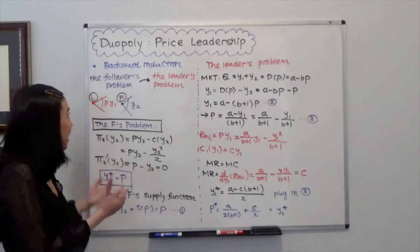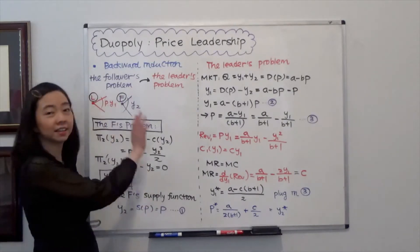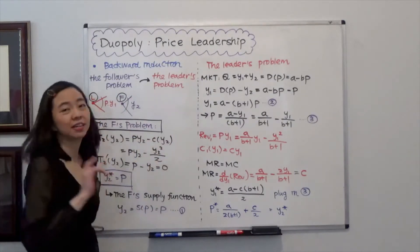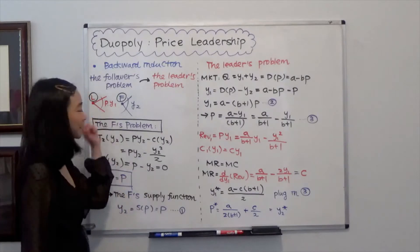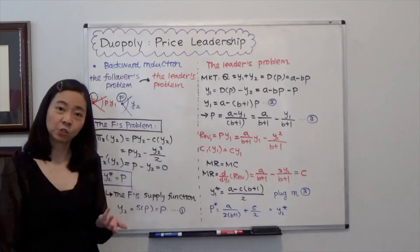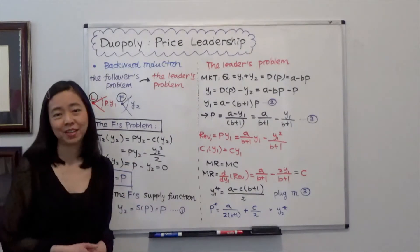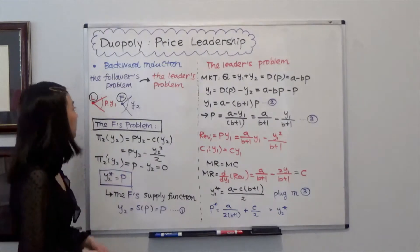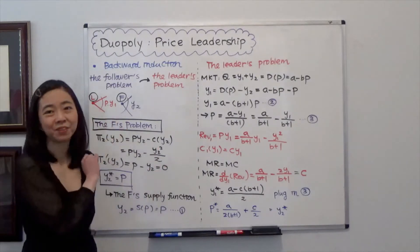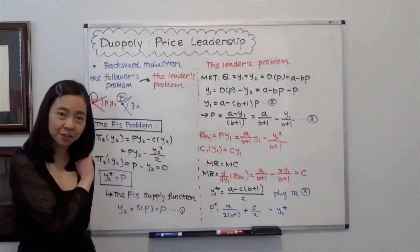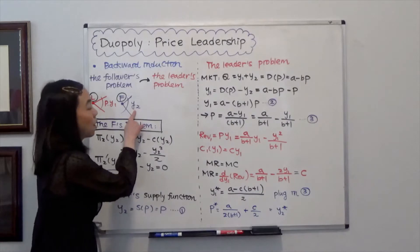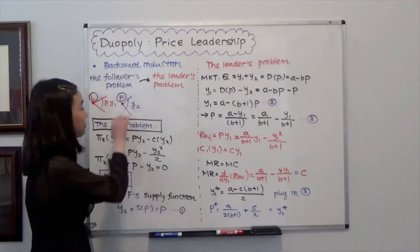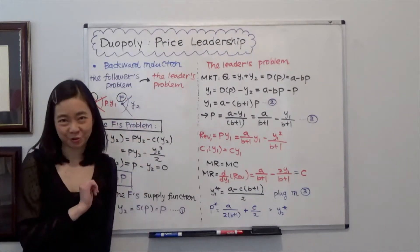In this game, we have a leader and a follower. The leader is going to determine the price and its own quantity Y1. Afterwards, the follower is going to observe the price, take it as given, and determine the quantity Y2 that maximizes the follower's own profit.